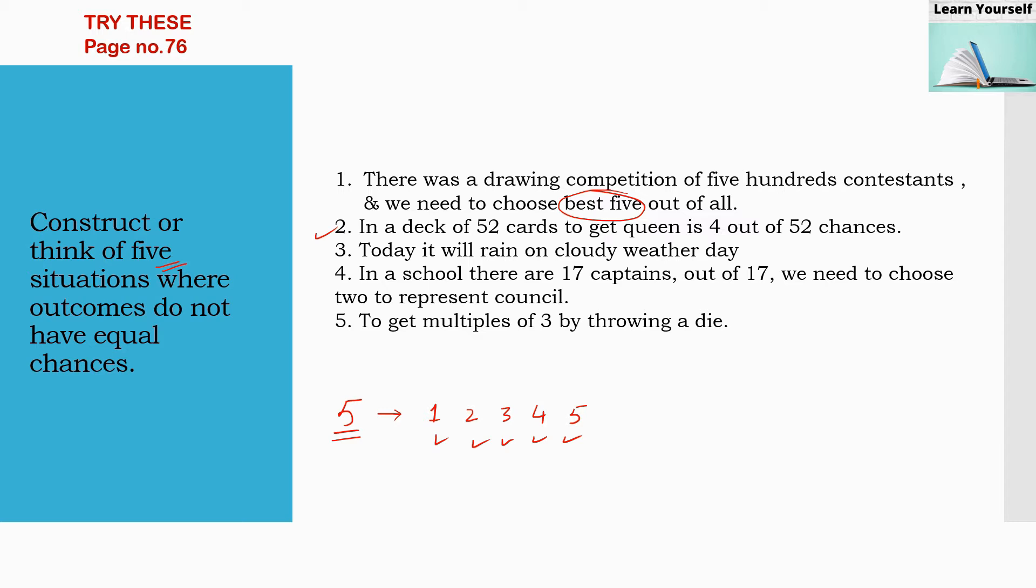Today it will rain on cloudy weather day because the weather is cloudy. So percentage of rain will be much more higher compared to dry weather. So rain on cloudy weather day where the chances are not equal or it is not 50-50 percent. It must be more.